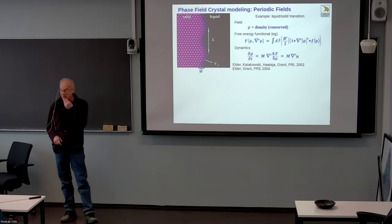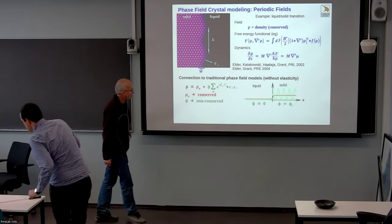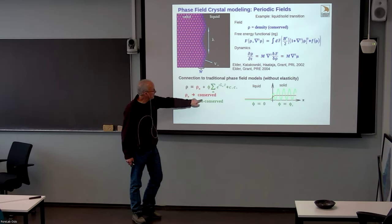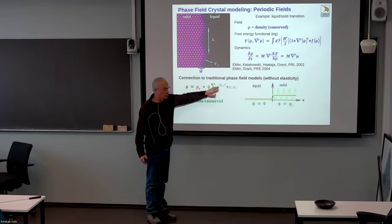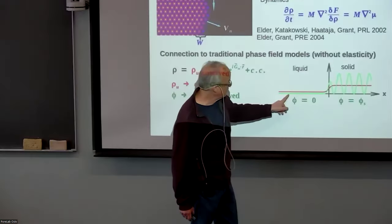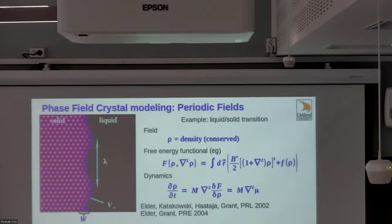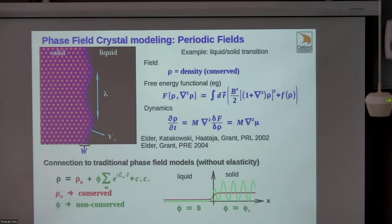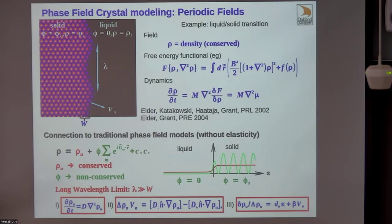What happens if we take the same limit for a phase field crystal model? The simplest approach is to consider a smoothed average density plus terms involving the principal reciprocal lattice vectors, which produce the periodic structure. If the amplitude goes to zero, we're in a liquid; if it has a finite value, we're in a solid. Typically, liquids and solids in coexistence have different densities. You can then take the long wavelength limit and recover exactly the same sharp interface equations as before.